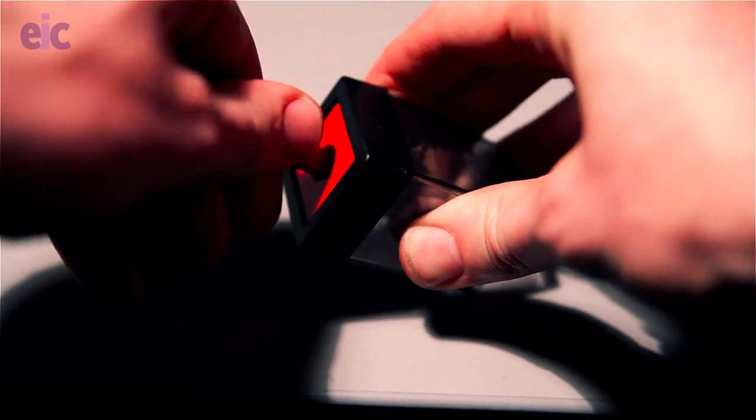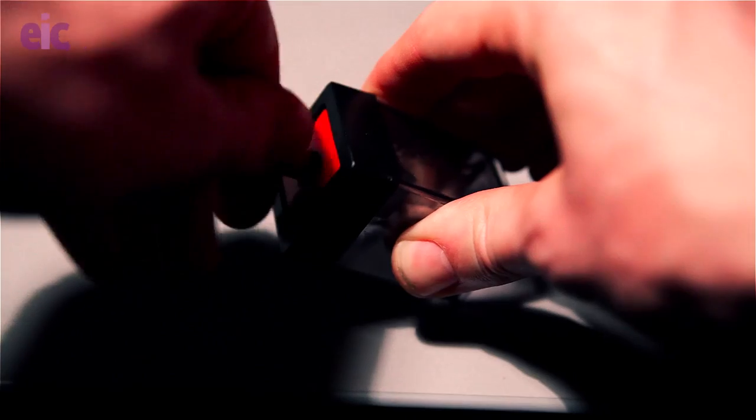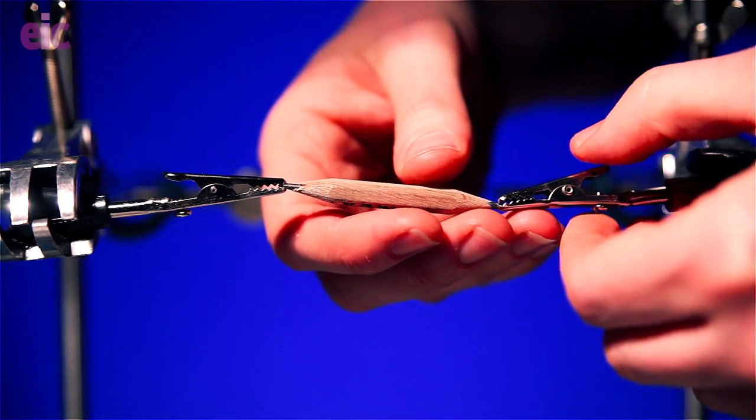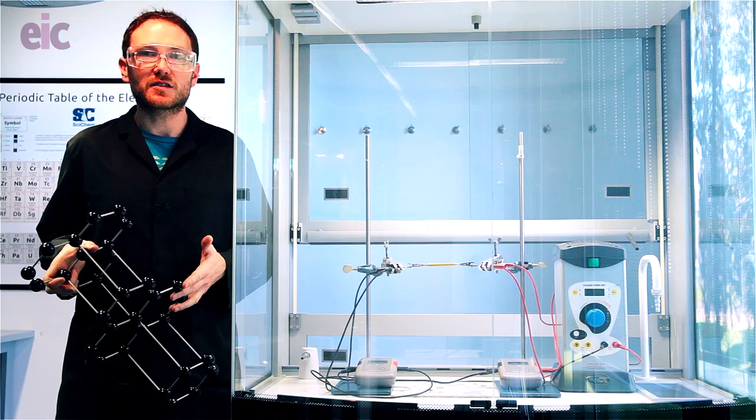The pencil itself is about 5 cm long, and I've sharpened off both ends. The crocodile clips are in contact with the graphite core, and that's how it's being connected into the circuit.